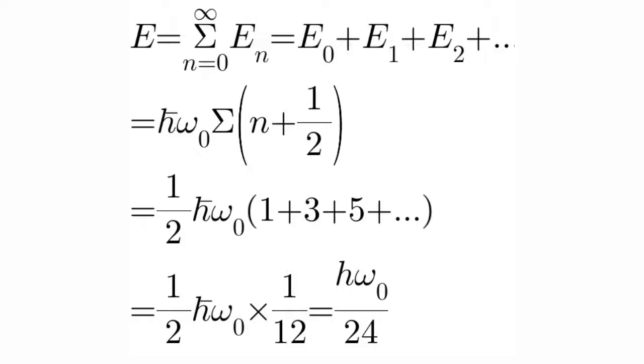Now that will equal to ℏω₀ summation of n plus 1 by half. Now notice if you factor out the one half factor, the summation becomes the sum of all odd natural numbers. So the total energy will be half ω₀ ℏ multiplied by the sum of all odd numbers.